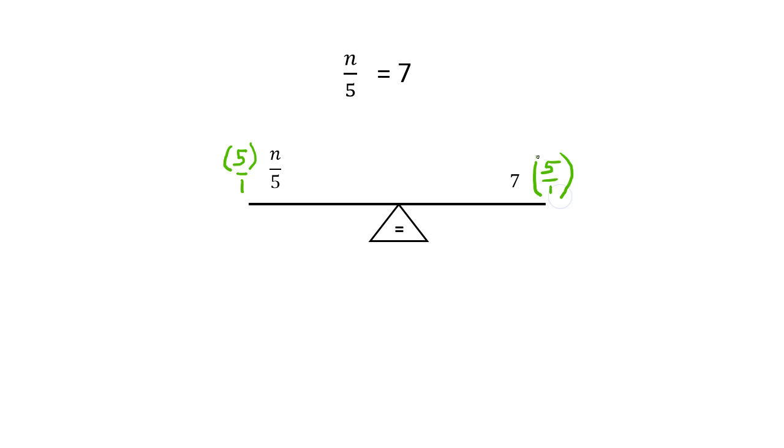Now on the right side, that 1 isn't really important because I'm multiplying it times a whole number. But on the left side, what I end up with is 5 times n over 1 times 5. So what that looks like when I take 5 times n over 1 times 5 is 5n over 5. Now we know that 5 divided by 5 is 1. So I get 1n equals 35 or simply n equals 35.